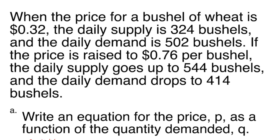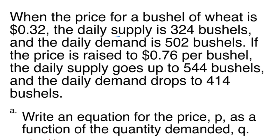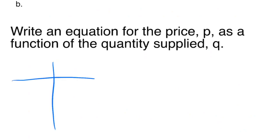For instance, the supply is 324 bushels at a price of $0.32. So that's 324 bushels at a price of $0.32, where this is the quantity supplied and this is the price.